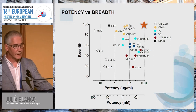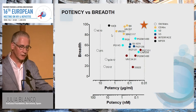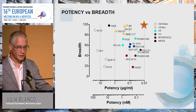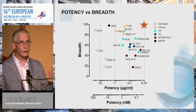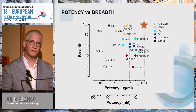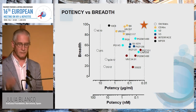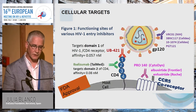Most antibodies with high coverage show intermediate potency, and most potent antibodies show intermediate breadth—meaning they only block about 50% of viral isolates, so there is 50% pre-existing resistance to these antibodies.